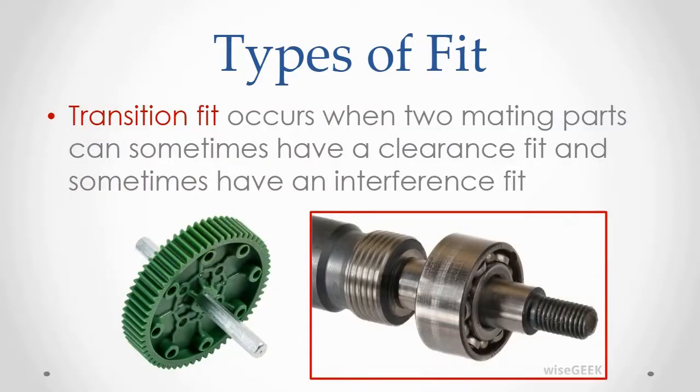The term transition fit is used to describe situations where mating parts may have a small clearance or interference depending on which end of the part's tolerance they were manufactured to. A transition fit typically results when the goal of the fit is to be exact, and the tiny amount of clearance or interference that results from incidental variations in manufacturing are negligible.